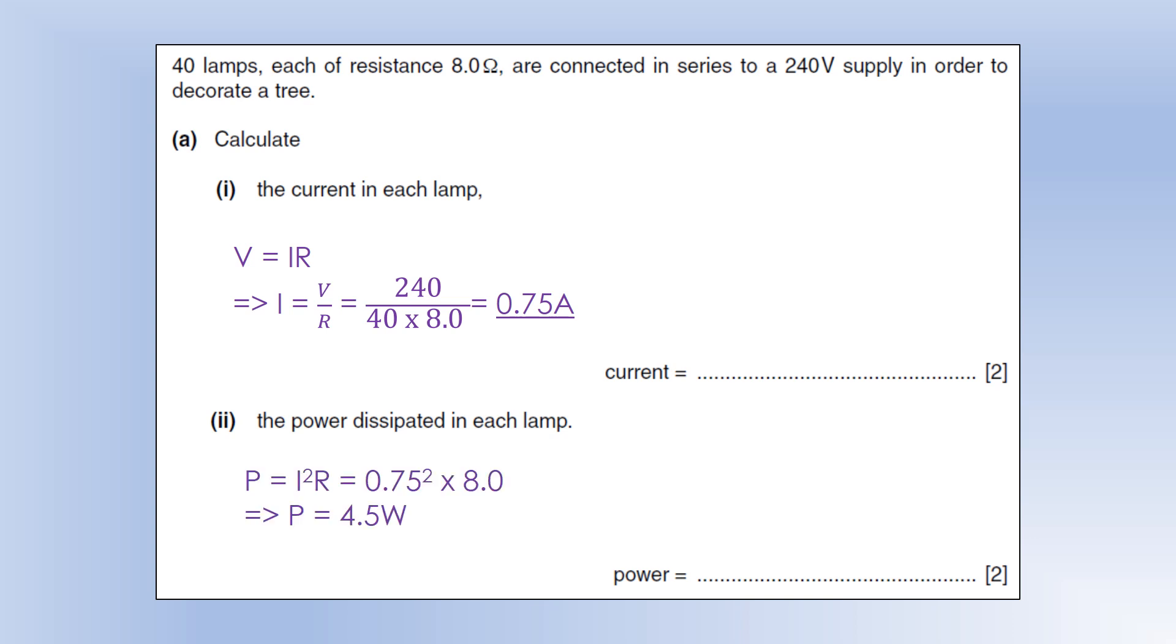If we want the power, I'm going to use P equals I squared R here. So we know the current and we know the resistance of a lamp, so we can figure out the power.